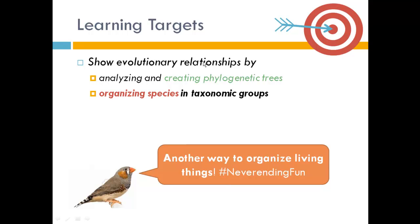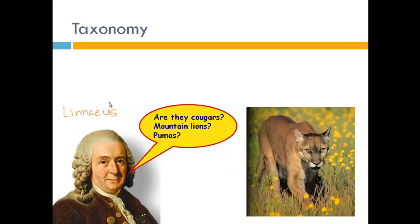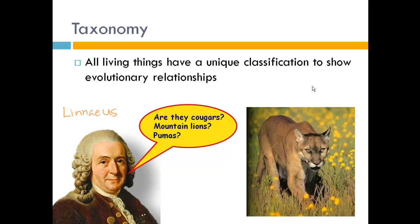Now we're going to move on to a different way to organize living things: organizing them based on their taxonomy. A guy named Carl Linnaeus came up with a really great idea because, quite frankly, there are a lot of living things. Depending on what country or region you lived in, you might call the organism on the right a cougar or a mountain lion. So he decided to classify all living things by standardized names, which also helps us show evolutionary relationships.